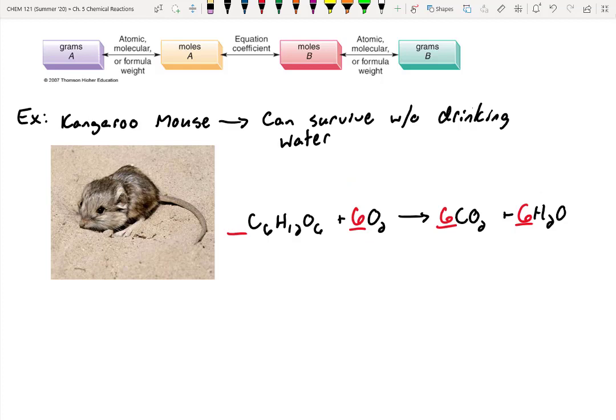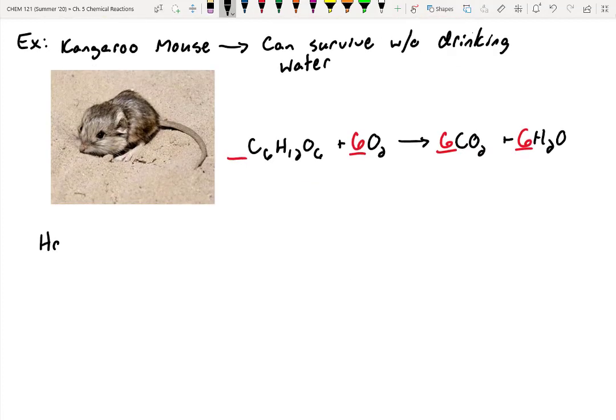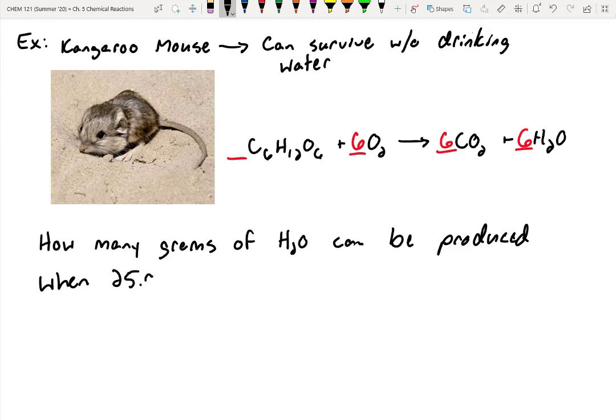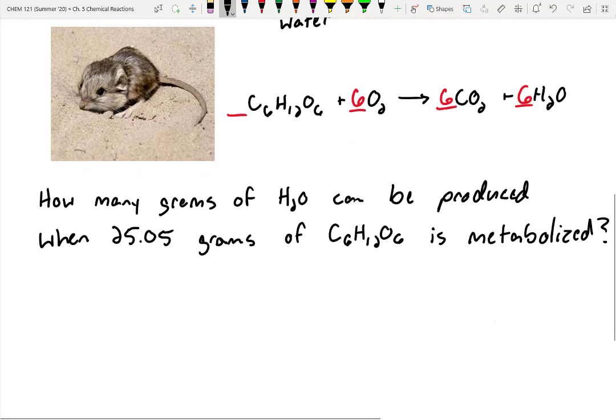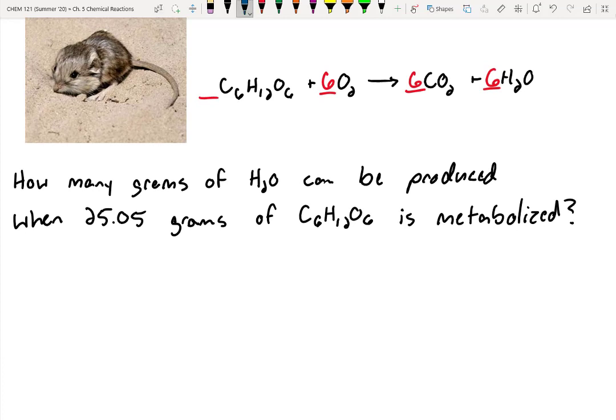This mouse can basically eat sugar, react it with oxygen by breathing, and then it exhales CO2. But this byproduct of water is what it survives off of. So let's figure out how much water we can make. Here's the example situation: How many grams of water can be produced when 25.05 grams of glucose, C6H12O6, is metabolized? And we're going to assume excess oxygen because we know this mouse is going to be in an environment where there's not a limited amount of oxygen.